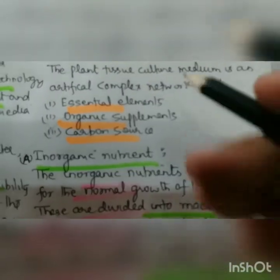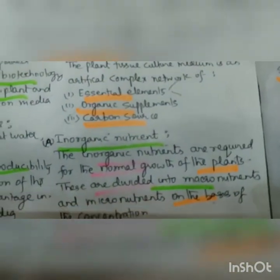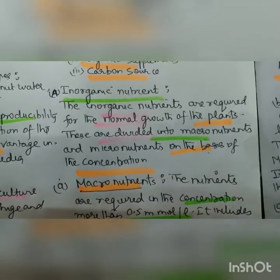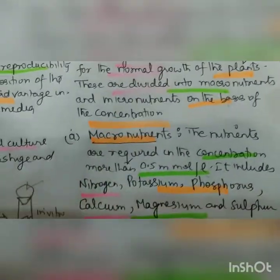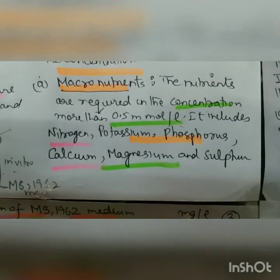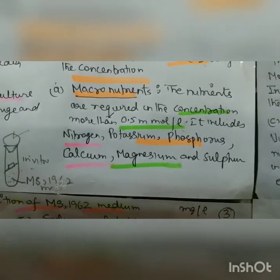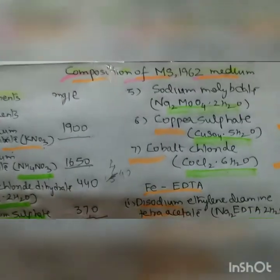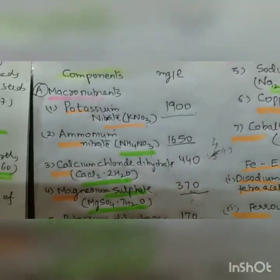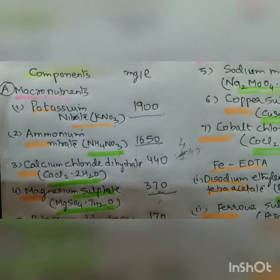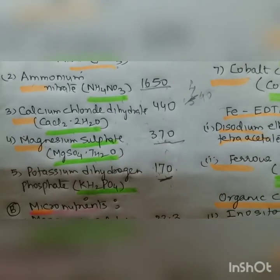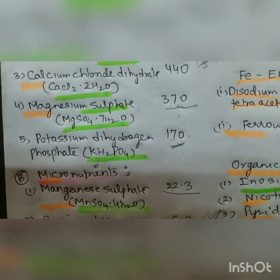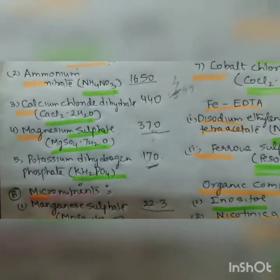The essential nutrients include macronutrients, micronutrients, organic supplements, and a carbon source. Inorganic nutrients are divided into macro and micro based on concentration. Macronutrients are required at more than 0.5 millimolar per liter and include nitrogen, potassium, phosphorus, calcium, magnesium, and sulfur. The MS medium macronutrients are: potassium nitrate (KNO₃) 1900 mg/L, ammonium nitrate (NH₄NO₃) 1650 mg/L, calcium chloride dihydrate 440 mg/L, magnesium sulfate (MgSO₄·7H₂O) 370 mg/L, and potassium dihydrogen phosphate 170 mg/L.